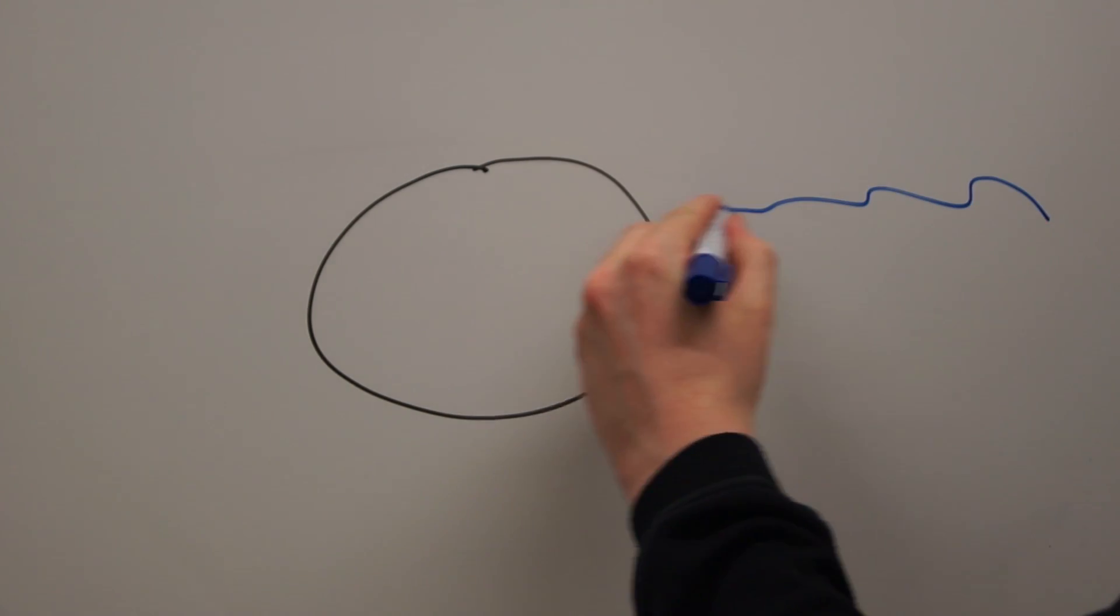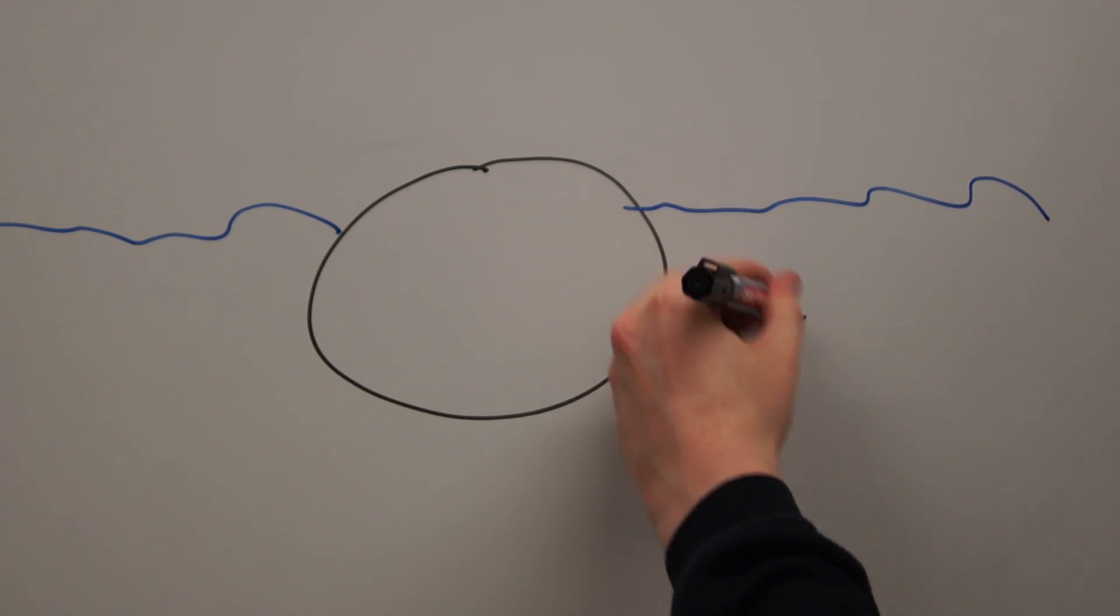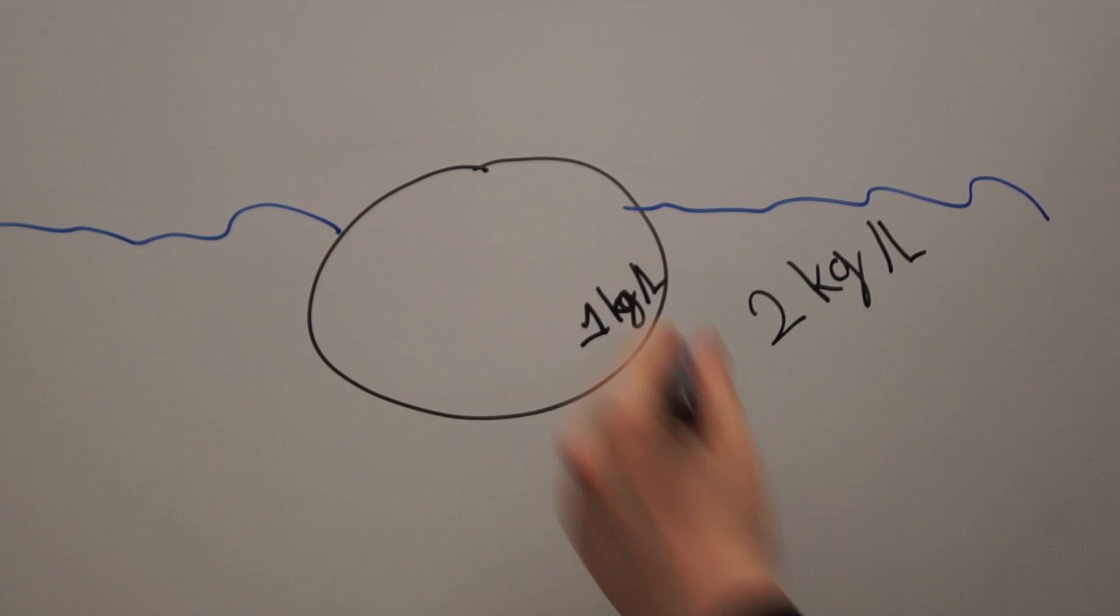That's because we haven't considered density yet. Humans, like most mammals, have an average density of one kilogram per liter, which is about the same as that of water. Sand and clay are much more dense. As a result, the quicksand is roughly twice as dense as water. So since you're only half as dense, you won't sink all the way.